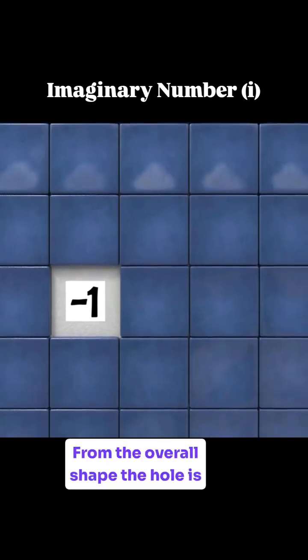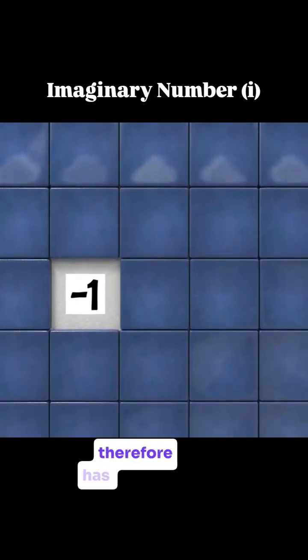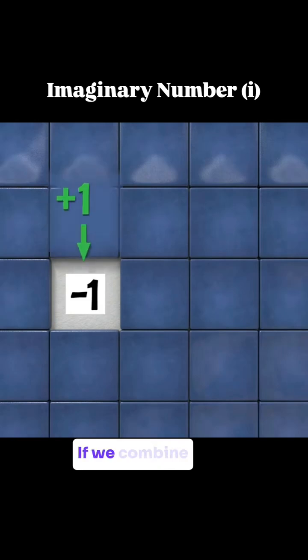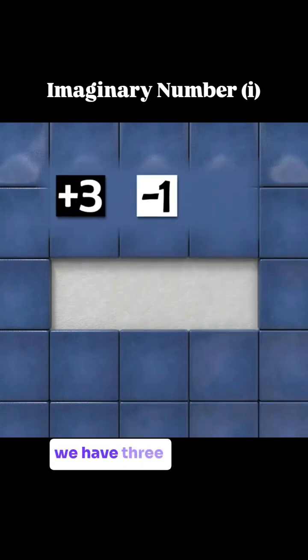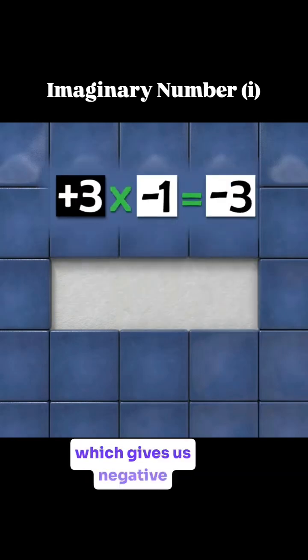Instead of a square, we can also work with a square hole. Since this hole is the absence of stuff, we can think of it as having a negative area. From the overall shape, the hole is removing one unit of area, and therefore has an area of negative 1. If we combine 3 of these holes, we have 3 times negative 1, which gives us negative 3.